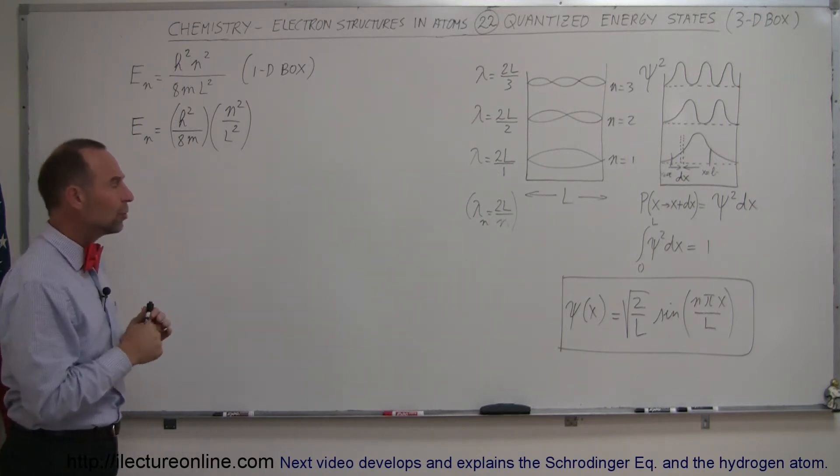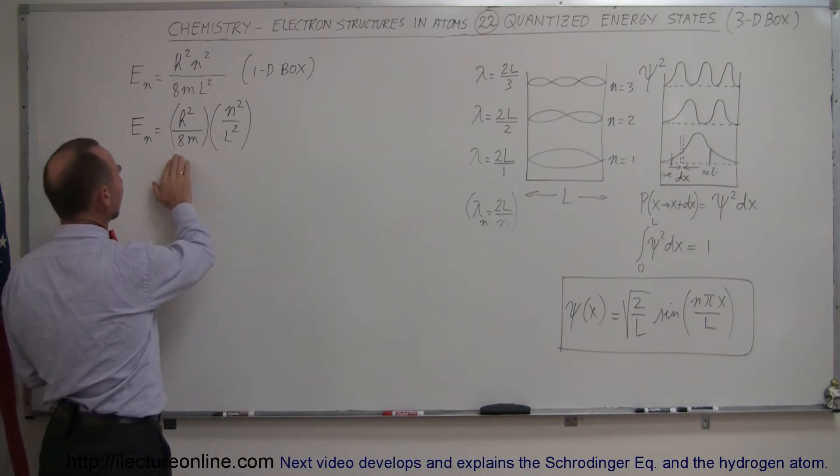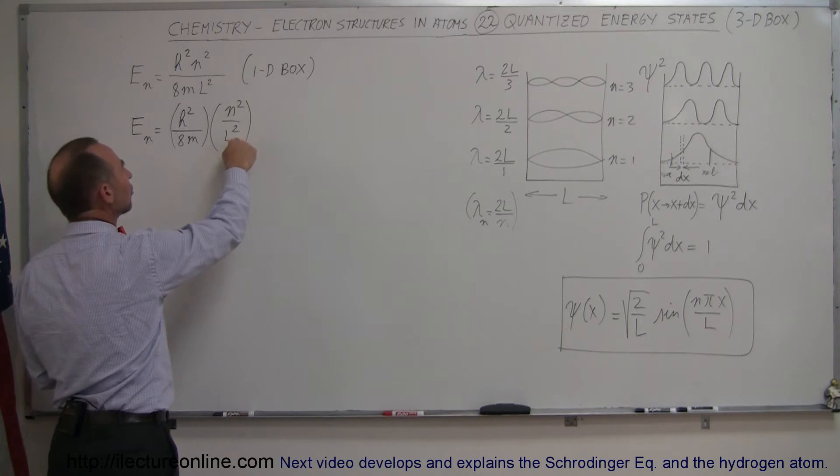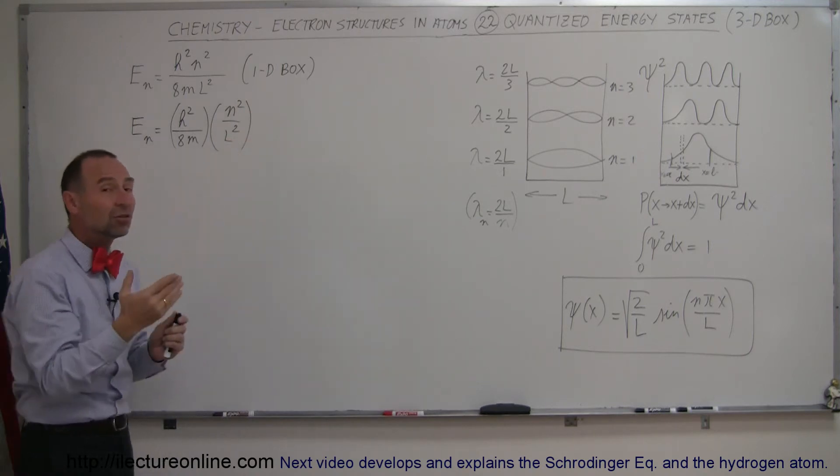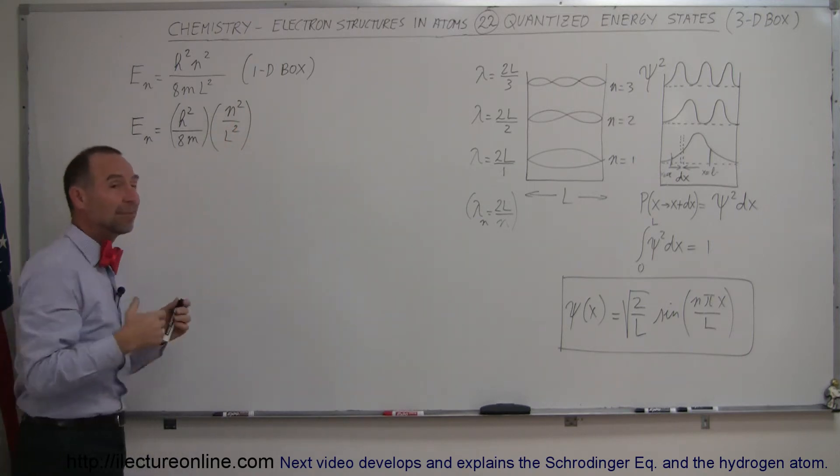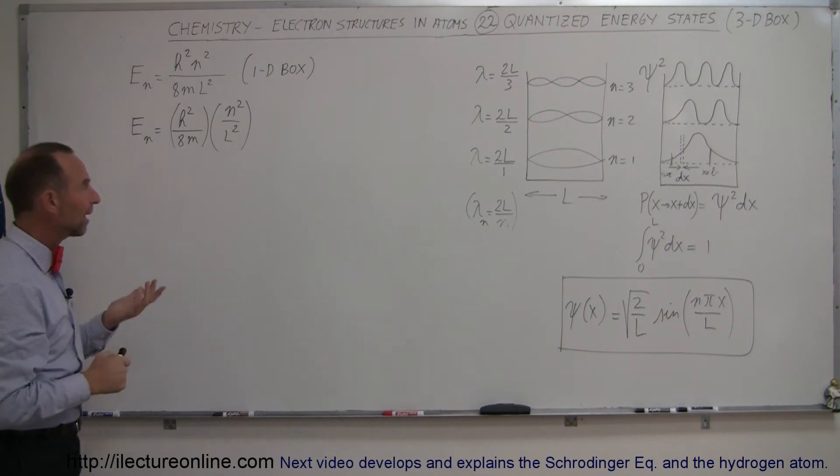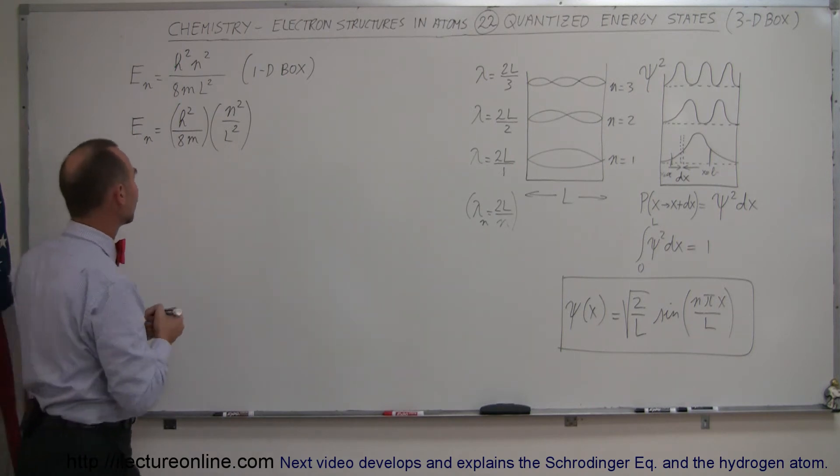So what we're going to do here is take the equation that we had on the last video, and separate the things that will be different in each dimension. So the length can be different in each dimension, and the energy state can be different in each dimension. So if that's the case, we can rewrite this equation as follows.